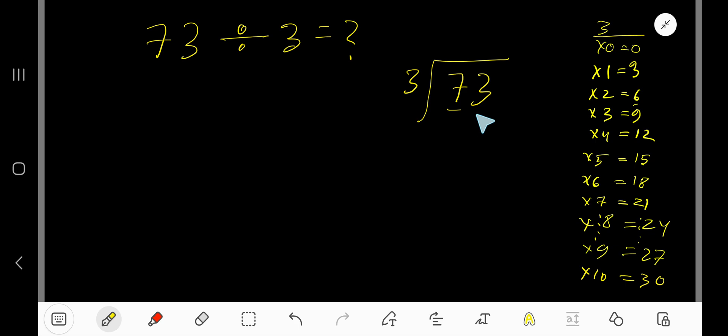Okay. 3 goes into 7 how many times? 3 times 9 which is greater, so 2 times. Write 2. 2 times 3 is 6, subtract to get 1.